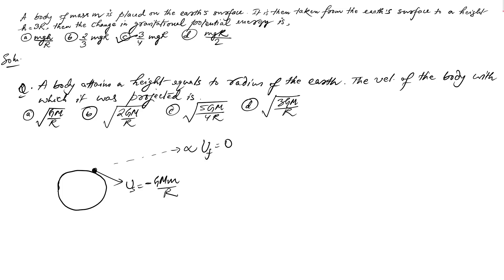To make the potential energy zero, we need to supply plus GMm/R of energy. If we add minus GMm/R and plus GMm/R, it becomes zero, meaning the body reaches infinity. We supply this energy in the form of kinetic energy so that the body reaches infinity and the total potential energy becomes zero.